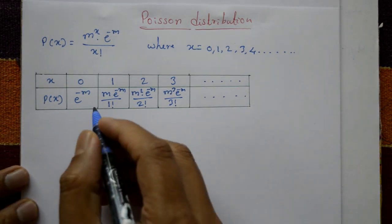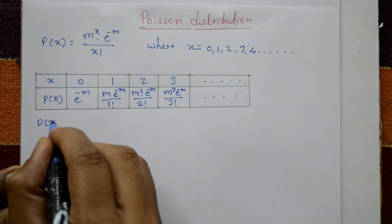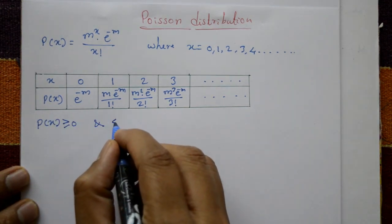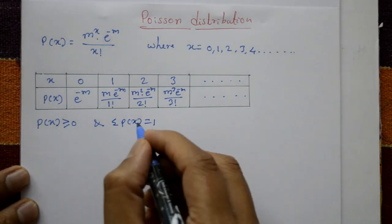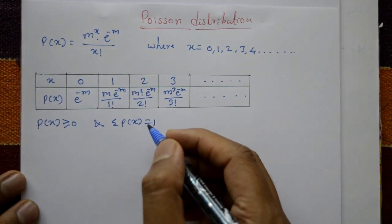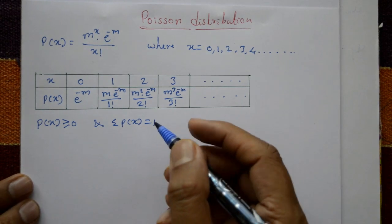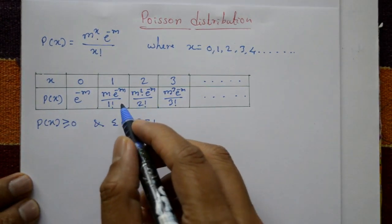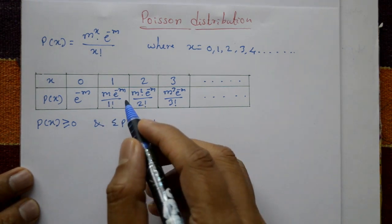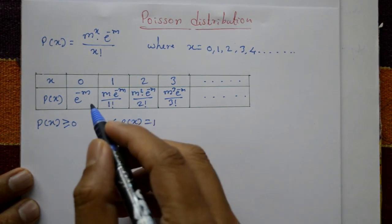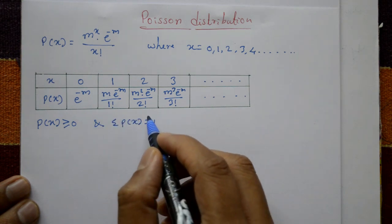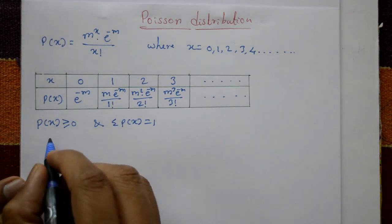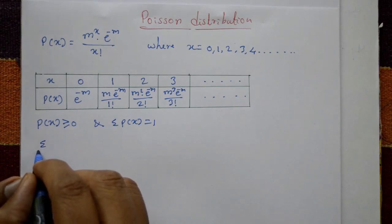Two conditions must be satisfied for P(x) to be a probability function: first, P(x) ≥ 0, and second, the summation of P(x) = 1. The first condition is satisfied since all P(x) values are positive, i.e., greater than or equal to 0.